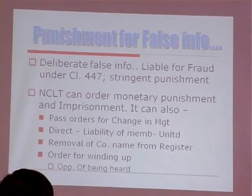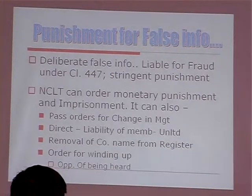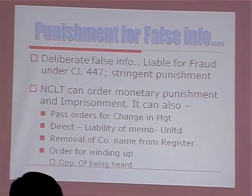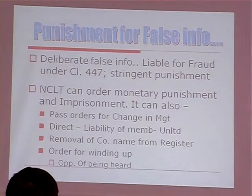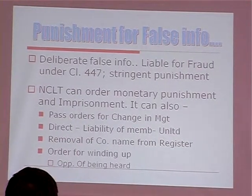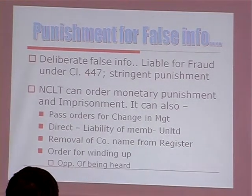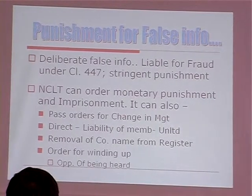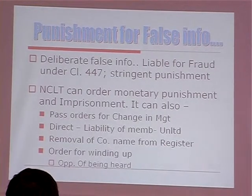Deliberate or false information given at incorporation makes one liable for fraud under Section 447. Earlier we used to say Section 420 for fraud; under the Companies Bill, it is Section 447 for fraud, and fraud has also been defined. There is stringent punishment for giving false information — NCLT can order monetary punishment and imprisonment, pass orders for change in management, direct the liability of members to be unlimited, and remove the company from its register. Very high penalty has been given for providing incorrect information at the time of incorporation.